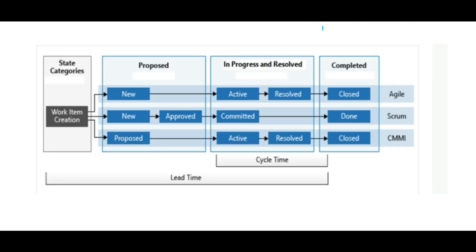Here is a diagram showing how cycle time and lead time look. Cycle time is measured from when a work item becomes active to when it is resolved — that is the time it took to resolve. Lead time is measured from when the item is first proposed, showing how much total time elapsed from proposal to completion.